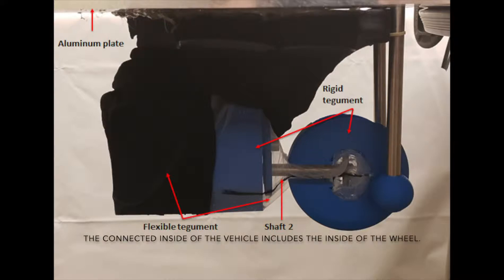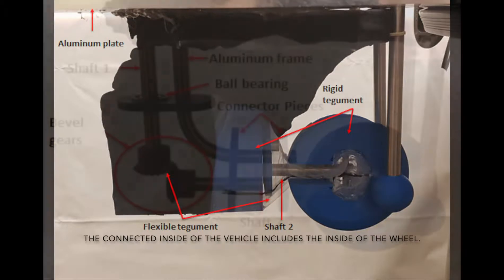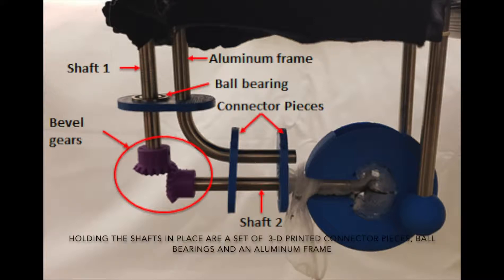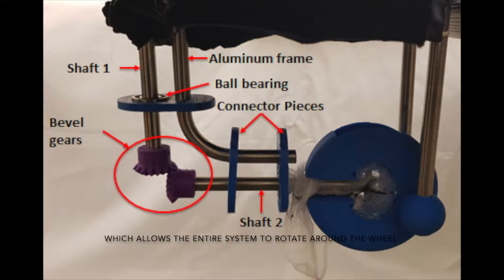Underneath the Tegumint are two rotating shafts that transport torque from servo motor 1 to the wheel via bevel gears. Holding the shafts in place are a set of 3D printed connector pieces, ball bearings, and an aluminum frame, which allows the entire system to rotate around the wheel.